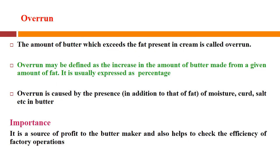Overrun is the amount of butter which exceeds what would be expected from the fat present in cream. It may be defined as the increase in the amount of butter made from a given amount of fat, usually expressed as a percentage. Overrun is caused by the presence of components other than fat — moisture, curd, salt, etc. — in the butter. It is a source of profit to the butter maker and helps to check the efficiency of factory operation.